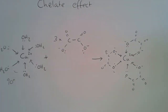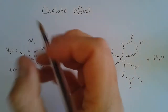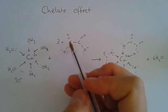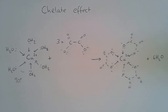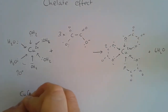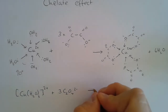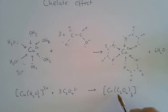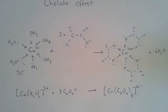Very importantly for the chelate effect, we have produced six water molecules. To review: we've taken copper with six water ligands and reacted it with three equivalents of ethane dioate to produce the new complex and six water molecules. Written out: [Cu(H₂O)₆]²⁺ + 3 C₂O₄²⁻ → [Cu(C₂O₄)₃]⁴⁻ + 6 H₂O. The charge on the complex is 2+ plus three lots of 2− giving 4− overall.